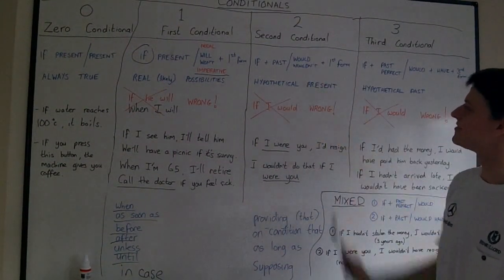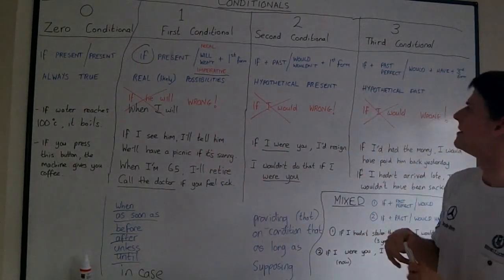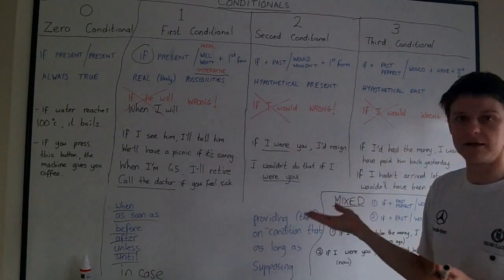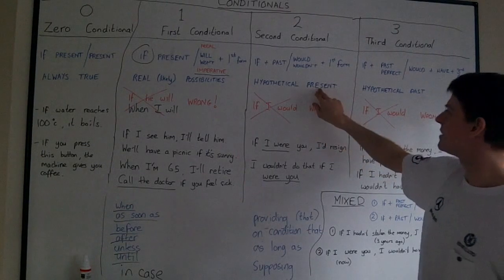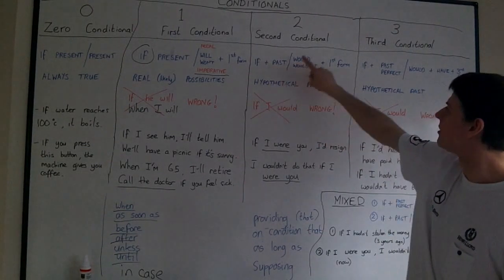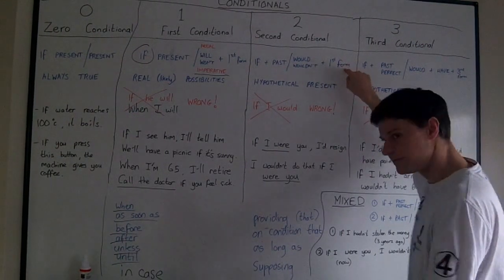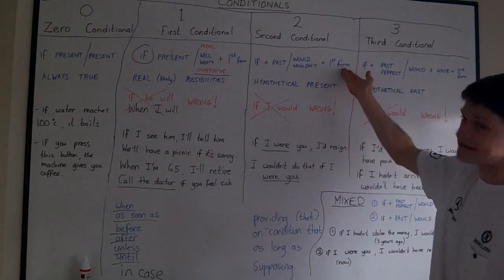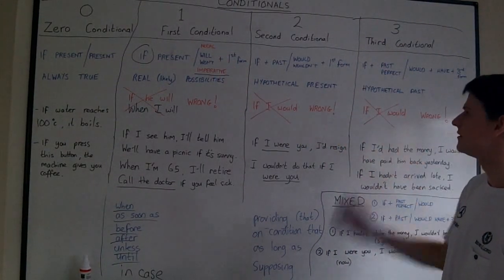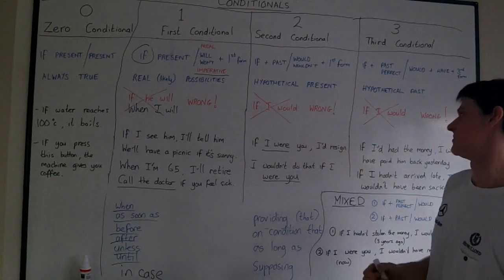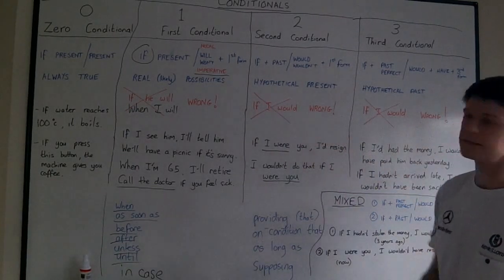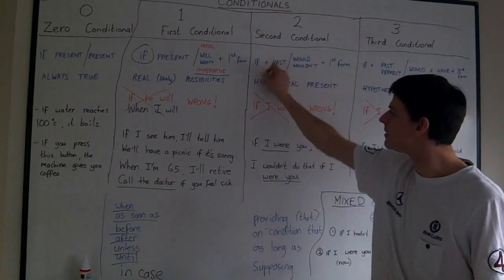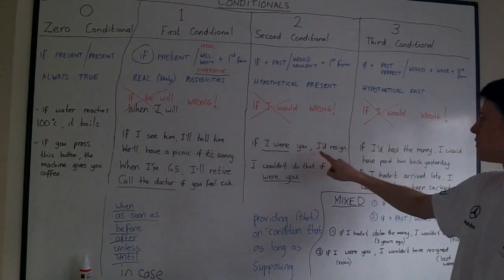Second conditional is for hypothetical present. It's not for real or likely possibilities. For my students, it's like, yes, it's not real. It's a hypothetical situation. And for present hypotheticals, we use this formula: if and past, would and wouldn't, and the first form. And the first form after would or wouldn't, just like the first form after will or won't. Infinitive is another way of saying first form. So, if I would. This is the typical mistake here. It's always wrong. It's not correct. Because we use if and the past. You cannot put would in the same part as the past. So, if I were you, I would resign.